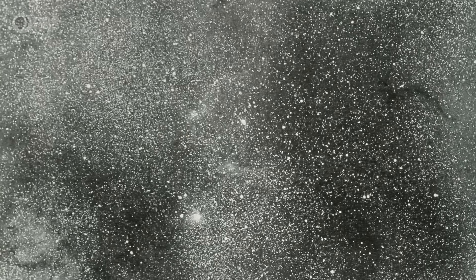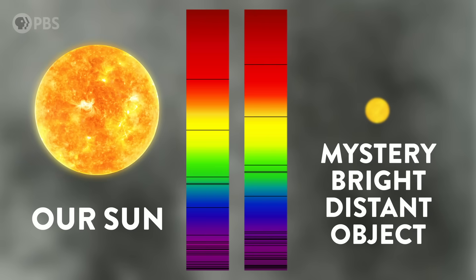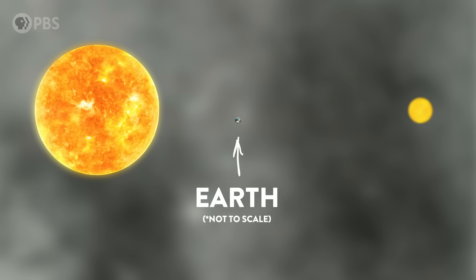After that, Slipher turned his spectroscope to a bunch of other fuzzy spots in the sky. He still didn't know what they were, but there was something weird about them too. Compared to our sun, their spectral lines were all shifted to the red end of the spectrum, which seemed to suggest there were a bunch of fuzzy objects in space hurtling away from Earth.